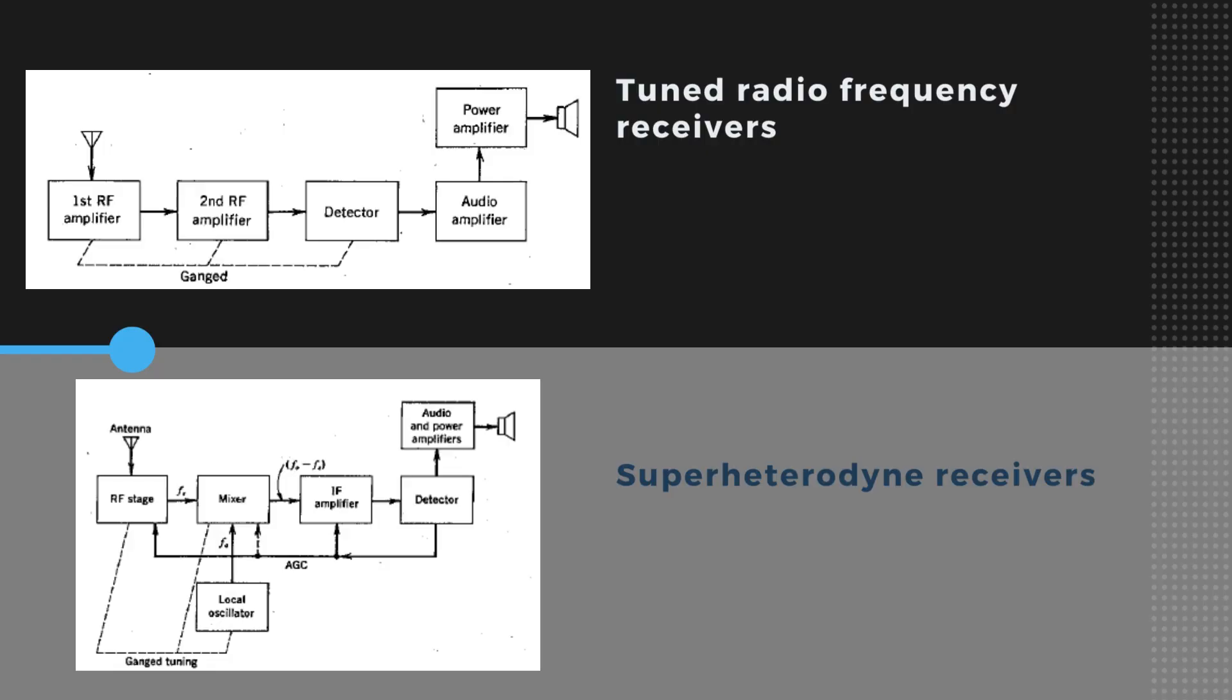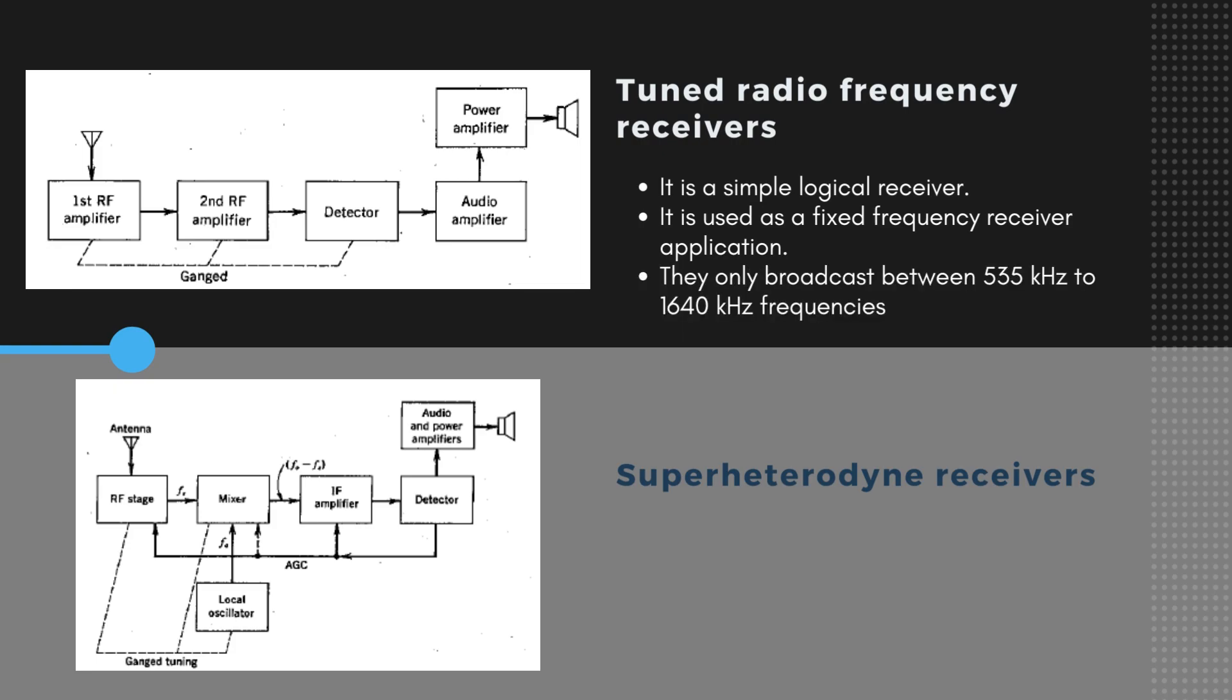Now there are two different types of receivers. Tuned radio frequency receivers and superheterodyne receivers. The former is simple logical receiver which we have studied till now. It is used as the fixed frequency receiver application. Two radio frequency amplifiers are employed tuning together to select and amplify the incoming frequency. They only broadcast between 535 kHz to 1640 kHz frequencies and are unstable and insufficient for higher frequencies.